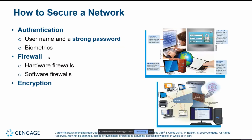To protect your home network: first, use strong authentication — strong passwords and network keys. We'll cover strong password strategies shortly. Biometrics are available more for business networks. Firewalls, implemented through hardware or software, block unauthorized access. If a threat is detected, the firewall can lock down and block all access. Finally, encryption, which we've covered previously.